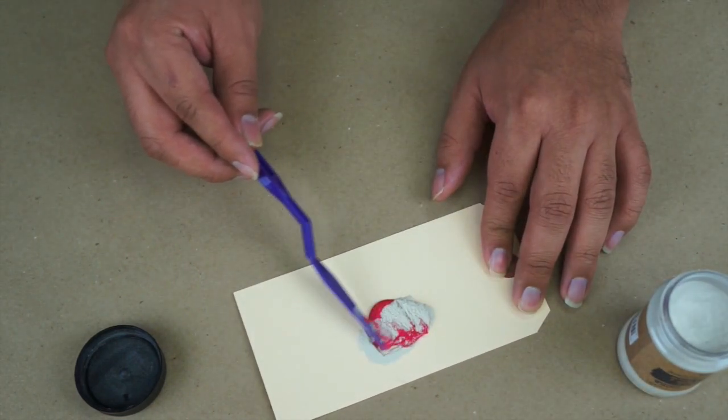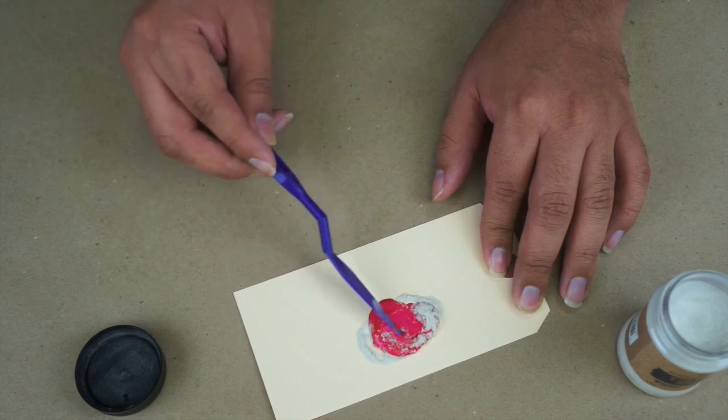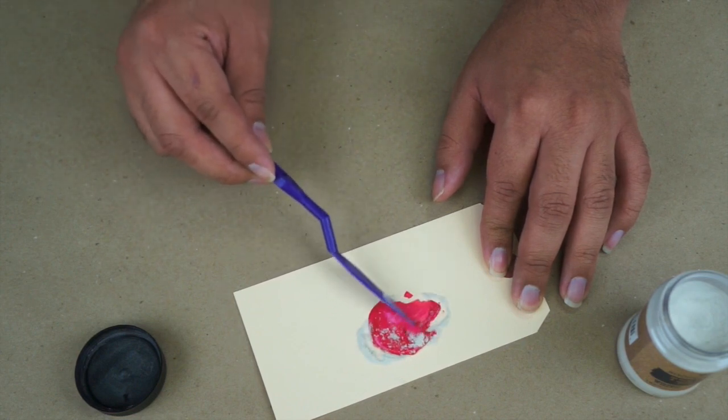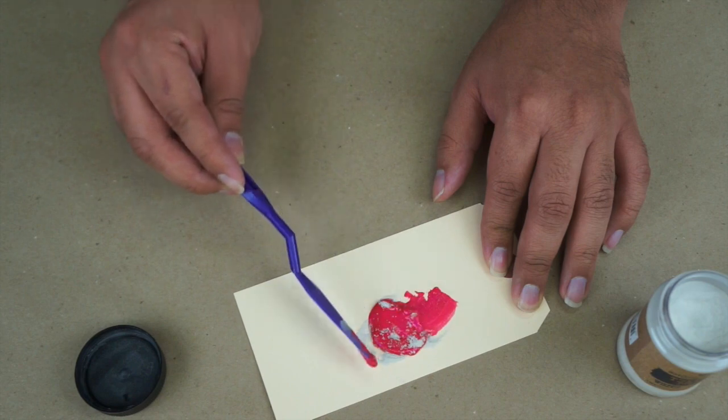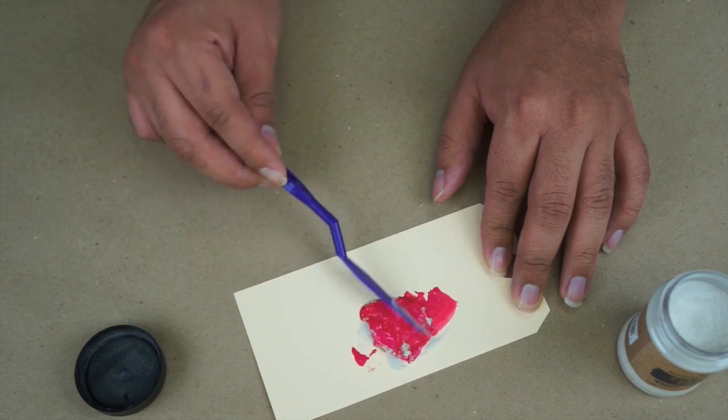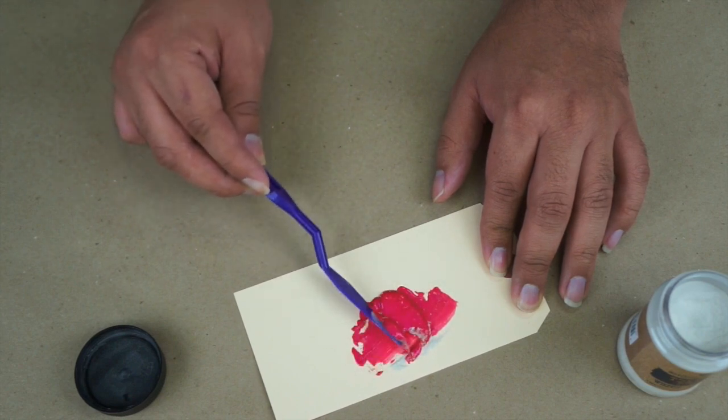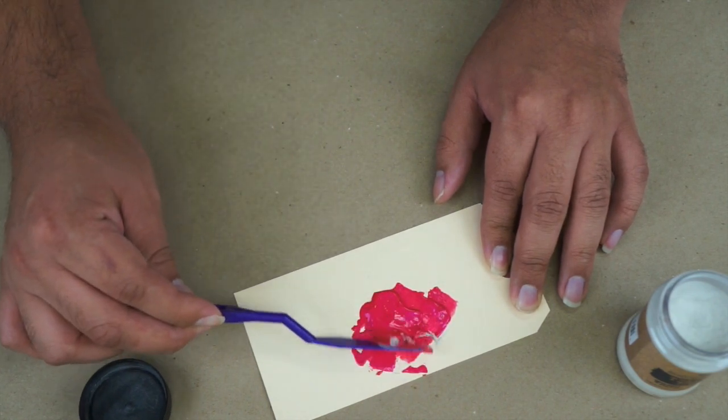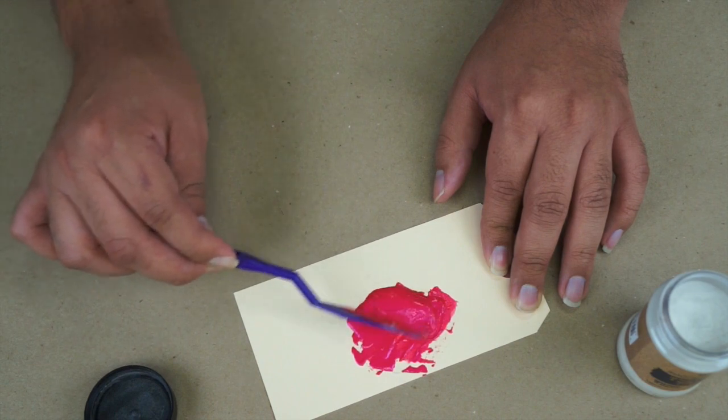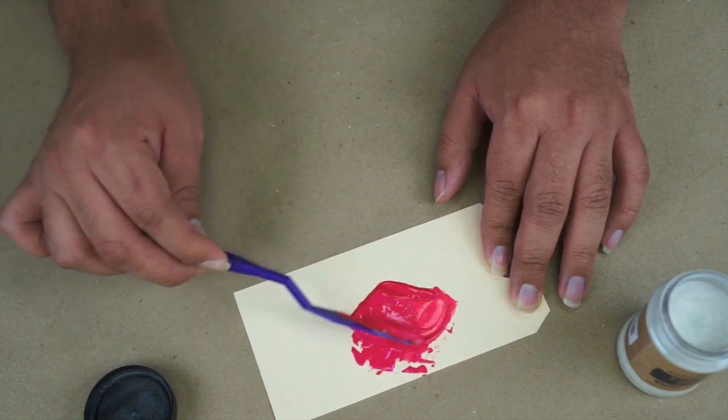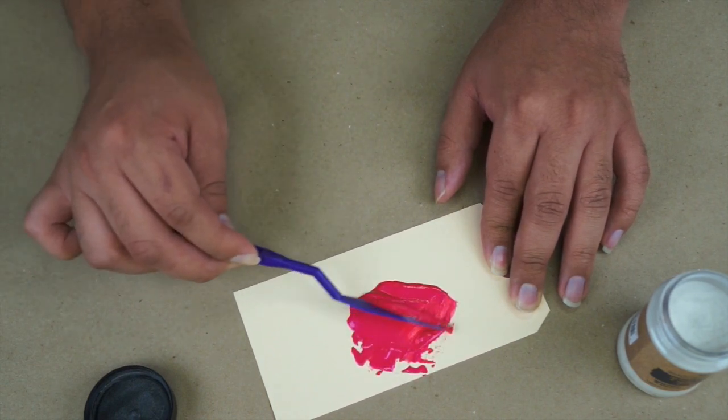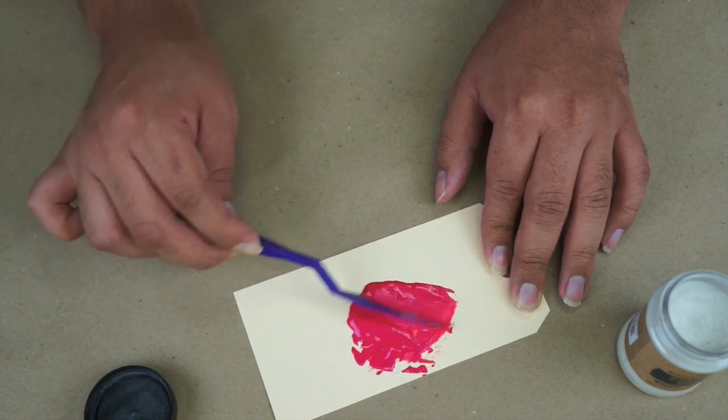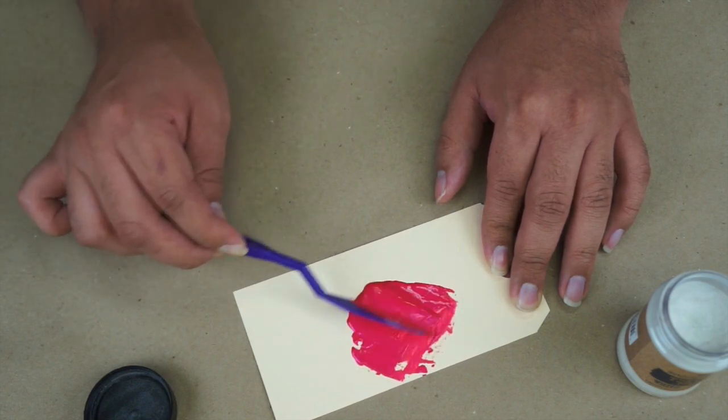So I'm just going to use my palette knife and mix it together. And you can see that immediately the texture of the paint changes from liquid to almost like a coarse light paste. It has a very pasty consistency once it's blended together.